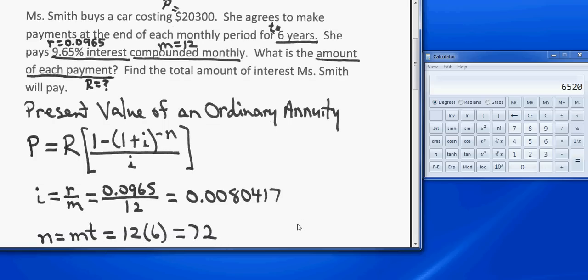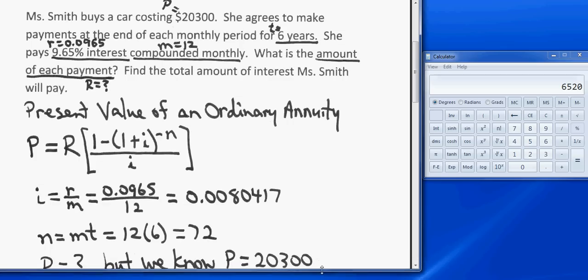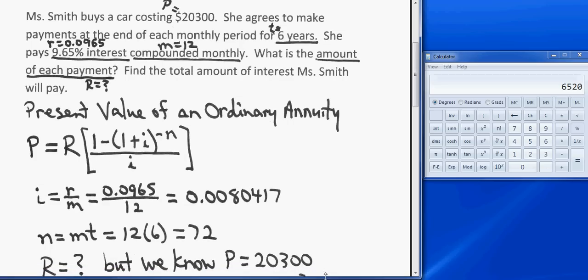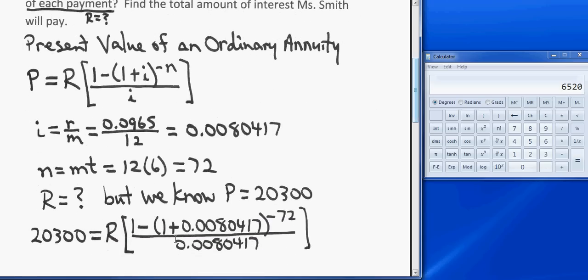Plug those values in. Even though we don't know capital R, the periodic payment—that's what we're looking for—we do know that the present value is $20,300. So when we take these values and plug them into the formula, we end up with 20,300 equals R times this huge nasty looking quantity that we'll do on the calculator.